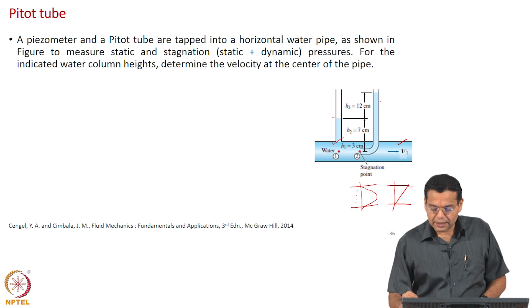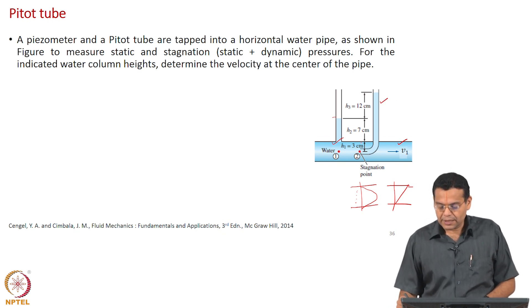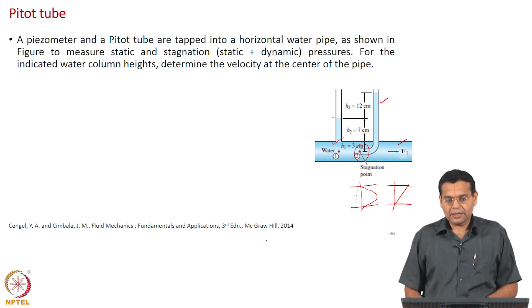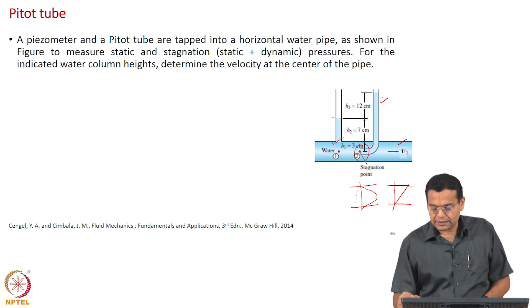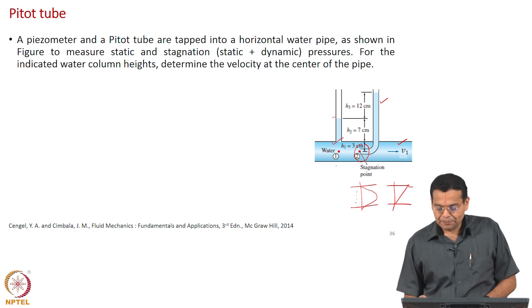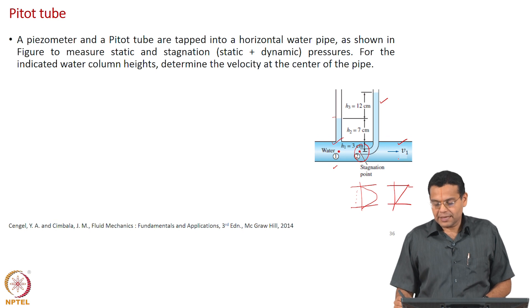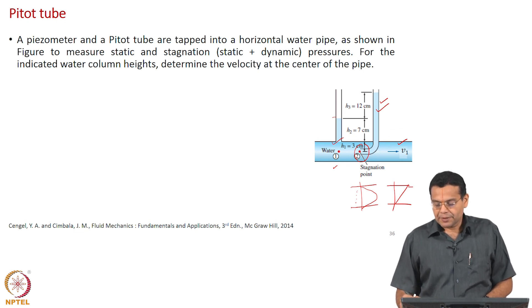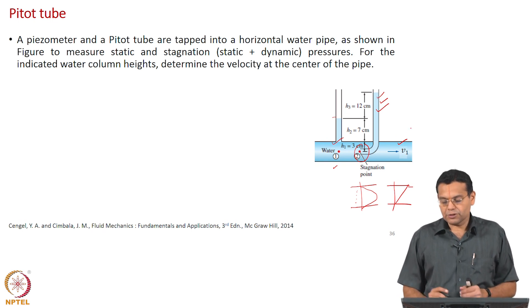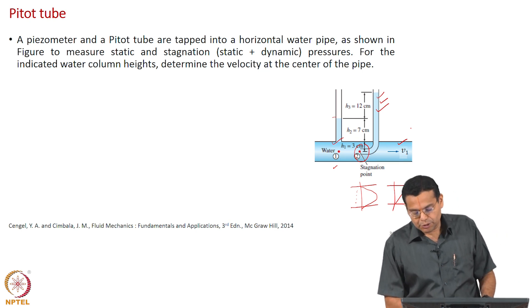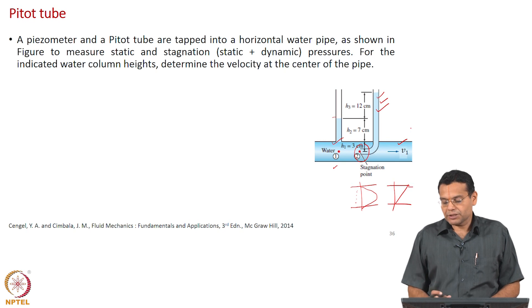You make another tube of L-shape — why L-shape? This end should face the flow, and water rises in this tube as well. Water has some velocity at point 1, and when it reaches point 2 it gets decelerated — the velocity becomes 0 at point 2. It loses all its kinetic energy, which results in increased pressure, and that is why you observe a higher water level here. The first tube represents static pressure; the second tube reflects the increased pressure due to conversion of kinetic energy.